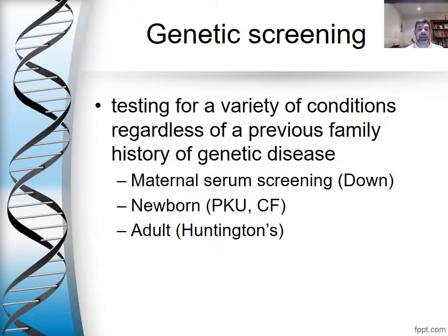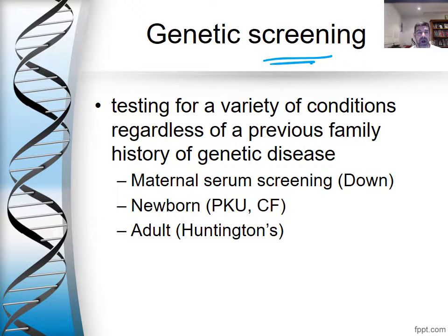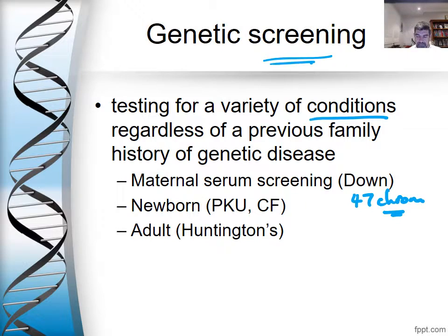We're going to look at a couple of different applications and see where they sit morally, ethically and scientifically. One important thing we can do now that we've mapped the human genome is genetic screening. Screening allows us to identify the presence or absence of certain genes that code for certain conditions. This could be something like Down syndrome, which has that extra chromosome — 47 chromosomes — where simply looking at chromosome numbers is sufficient to identify the condition, whereas other conditions require looking for the presence of a specific gene.